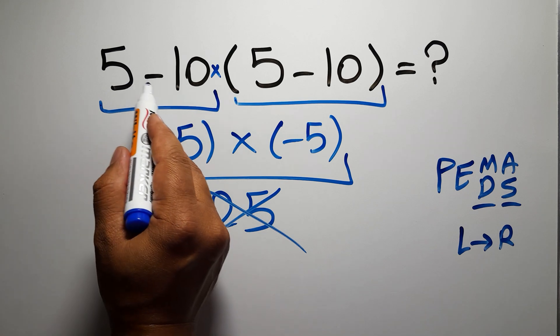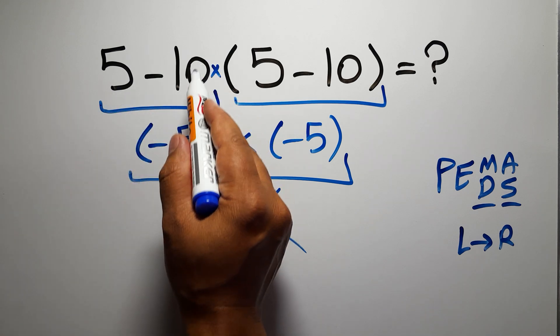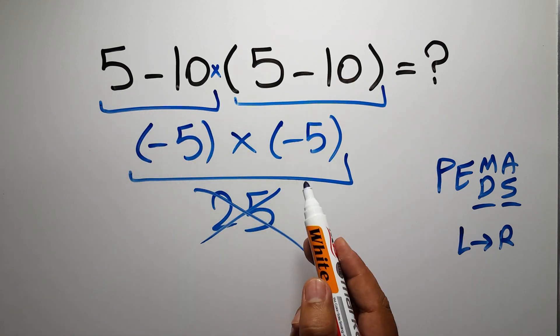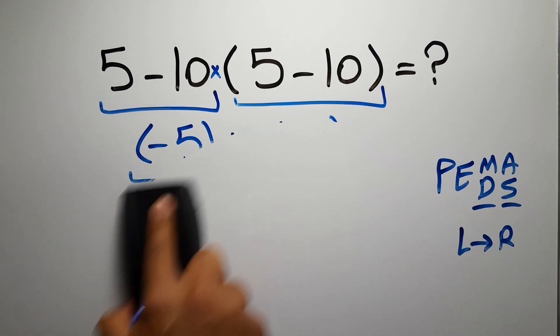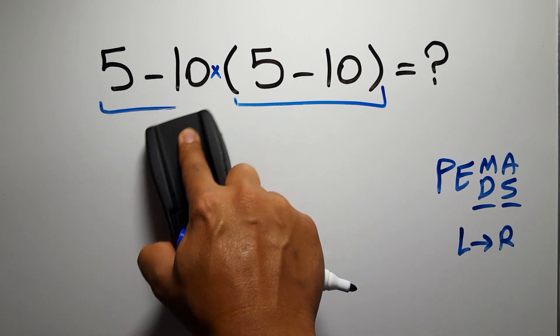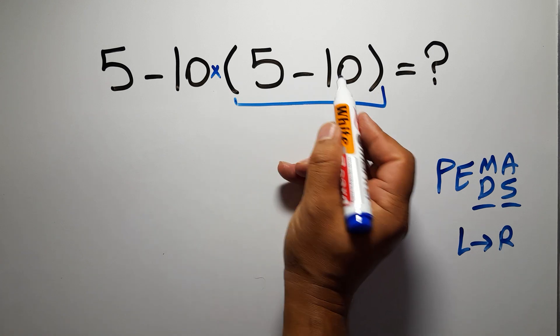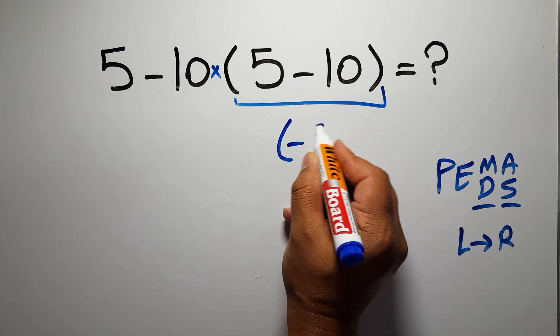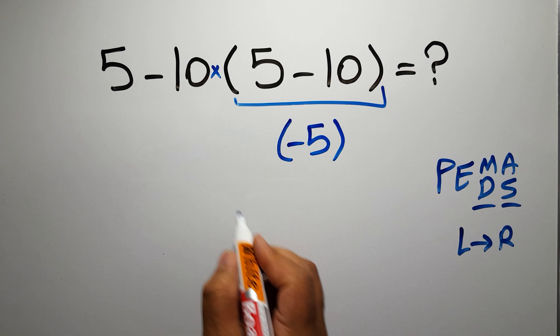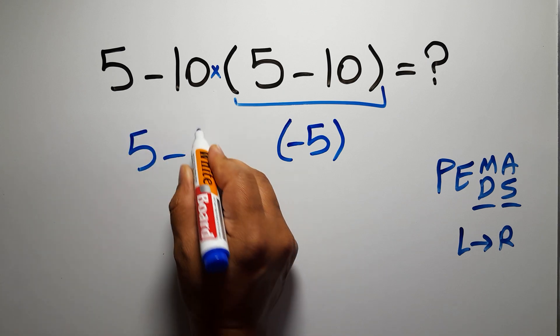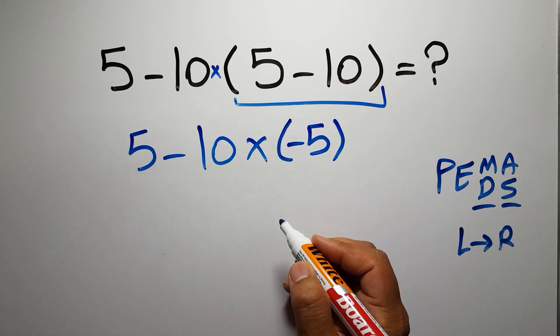If you do this subtraction before this multiplication or this parentheses, it is wrong. So first, this parentheses: 5 minus 10 gives us negative 5. So we have 5 minus 10 times negative 5.